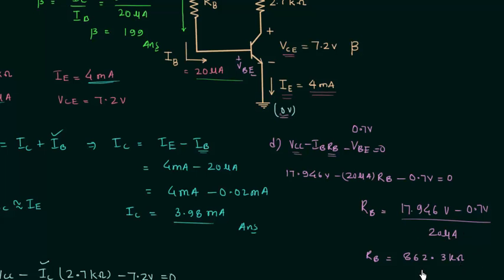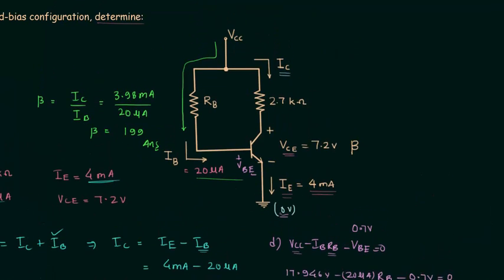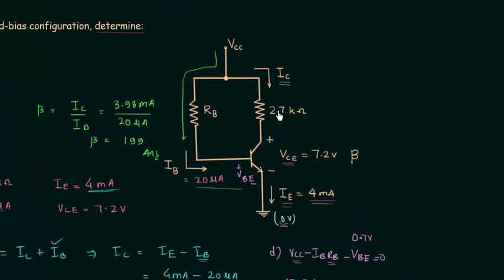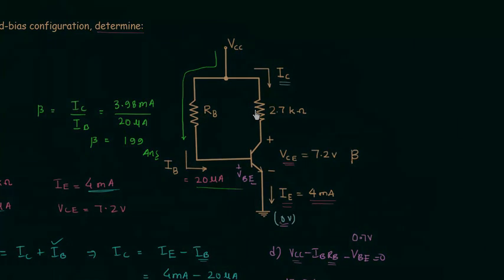This is the answer to Part D, and this is how you solve the fixed bias configuration of a transistor. This is all for this lecture — see you in the next one.